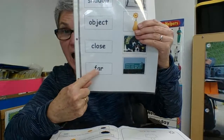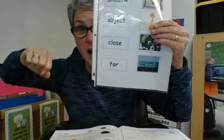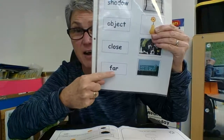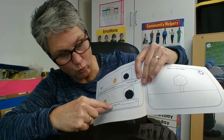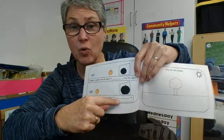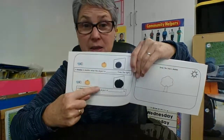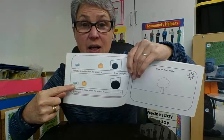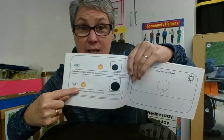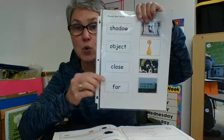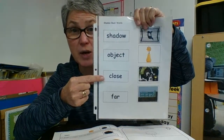Think about our words that we have. A-R makes that ar sound. Far. Then I have: a shadow is bigger when the object is — well, if we did far up here, then this one has to be what? You're right. This one is close. And to help that O say its name, we're going to need that silent E on the end. So we have the word close. Close is going to go in that spot there.